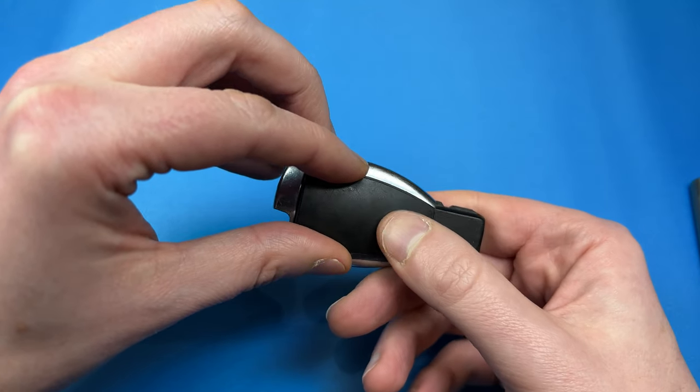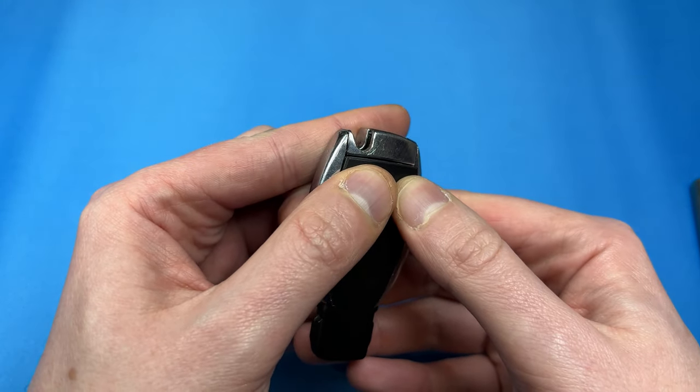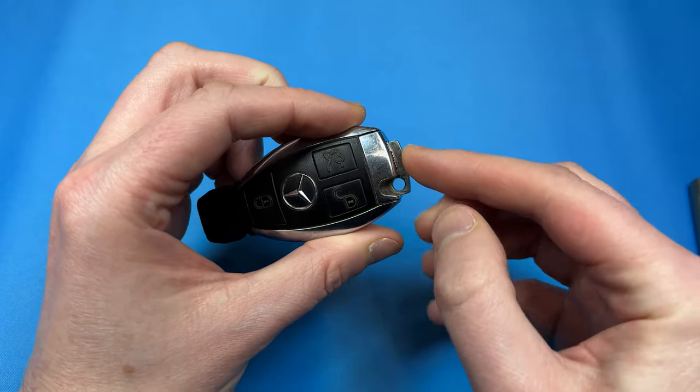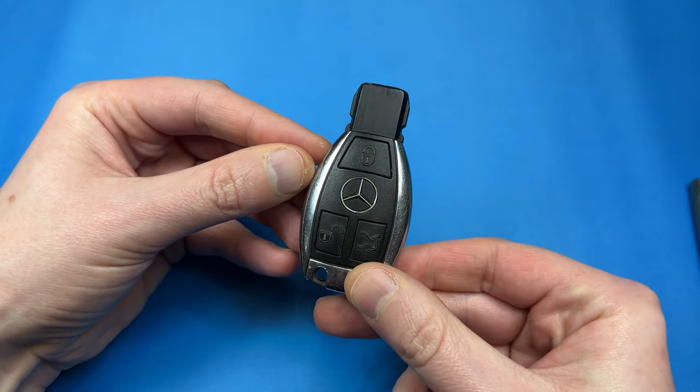Then you take the back and put the front in first, then apply light pressure to the top to click it back into place. Finally, take the emergency key and slide it back in. There you go. Bob's your uncle, Fanny's your aunt.